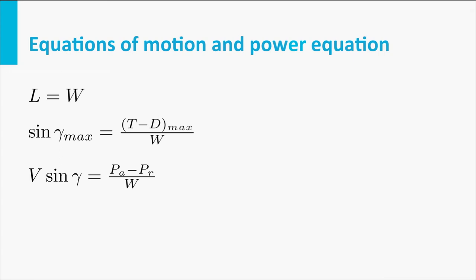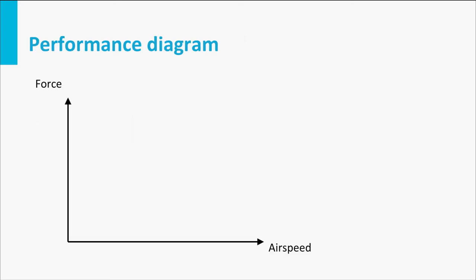So at which airspeed do we have the maximum difference? This can be observed in the performance diagram. The aerodynamic drag has the following shape if we represent it with a parabolic lift-drag polar. The shape of the curve representing the maximum thrust at various airspeed depends on the type of propulsion system used.